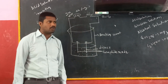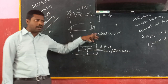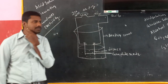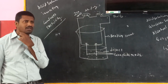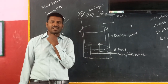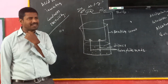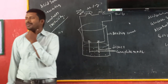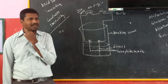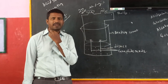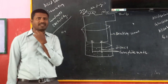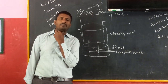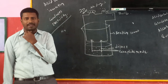Hence the bulb did not glow. We conclude that acid solution in water will produce electricity, whereas glucose and alcohol will not produce any electricity. This experiment has been asked seven times in public examinations. I hope my explanation will be useful to all. Thank you.